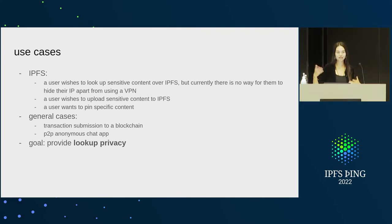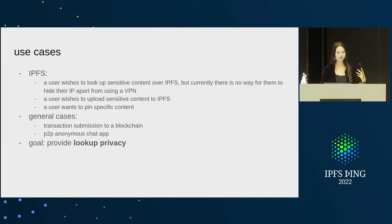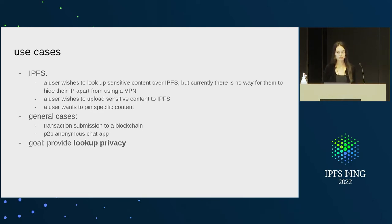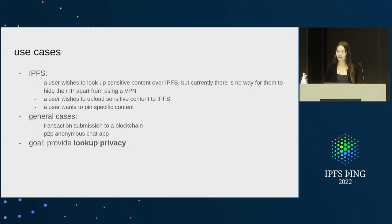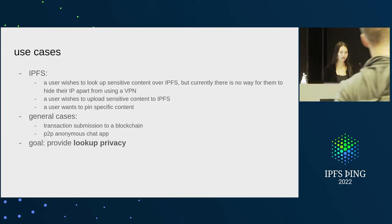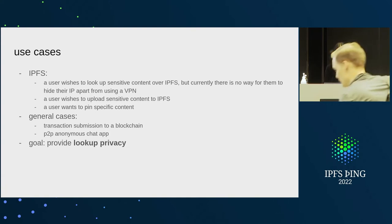Starting with some use cases. For IPFS, some of the main use cases are for lookup privacy. If you want to look up information that may be sensitive or politically banned, there's currently no way to really hide your IP from people apart from using a VPN, but that's centralized. You can't really rely on users to do that if they need protection — you want to build it into the system.